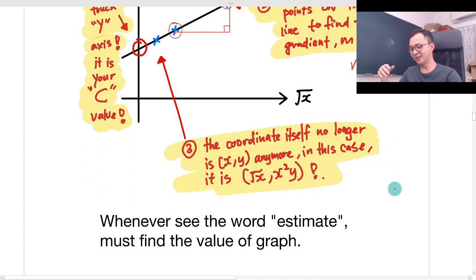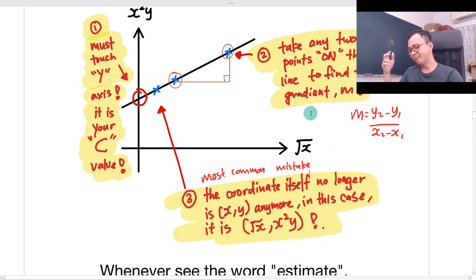And then last thing, this is the most common mistake. So let's say you have this coordinate. This coordinate, let's say is (3, 4).